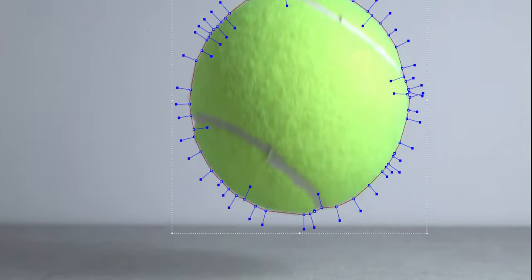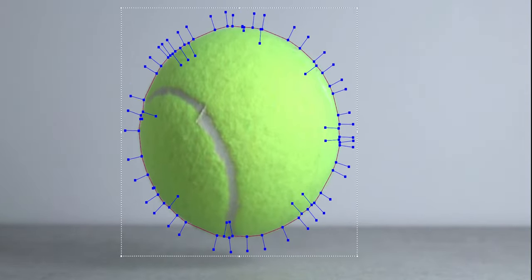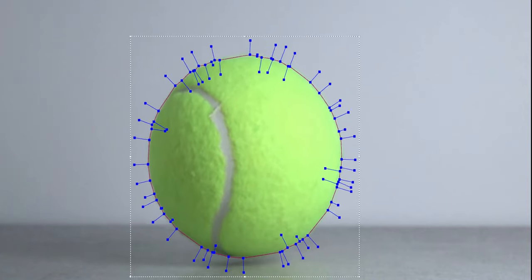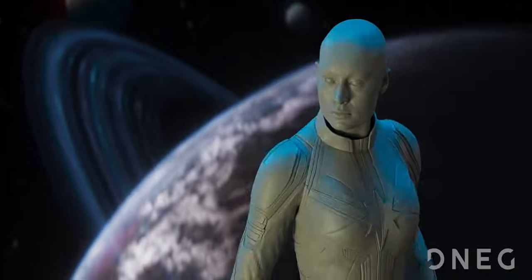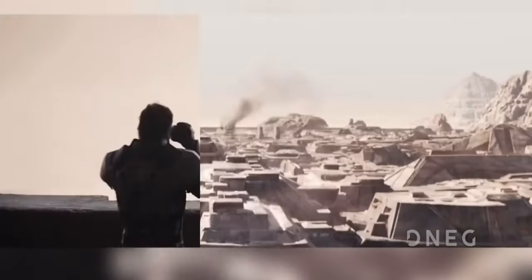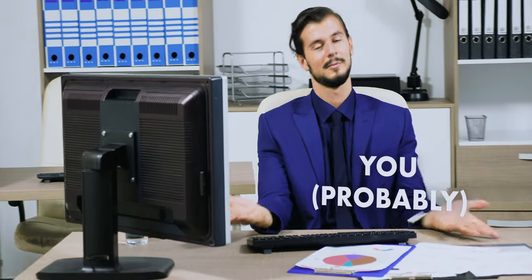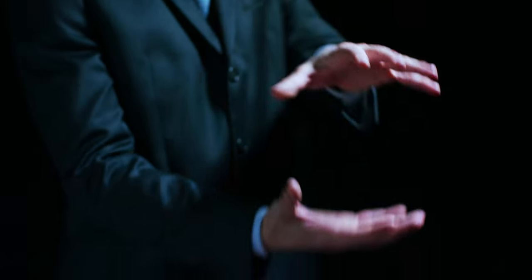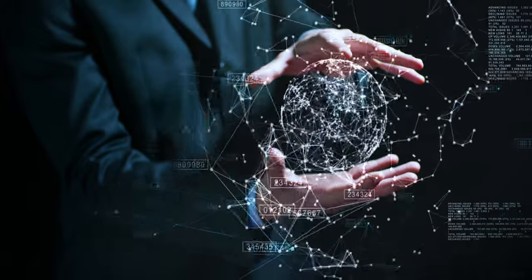So as we briefly touched on, rotoscoping is a method used to manually separate parts of a video from others by creating an animated mat around your subject. Often you'll be able to use a green, blue, or fancy sand screen from Dune to remove your subject from the background. This makes removing the background a lot simpler. However, it's not always possible to use these approaches and you're left to do it manually. While this does sound daunting, modern VFX technology can help ease the burden a bit.